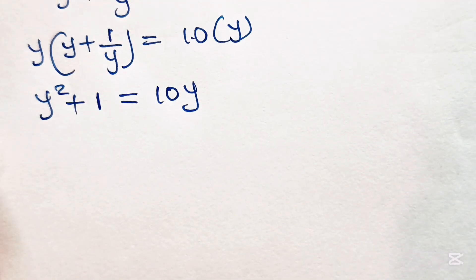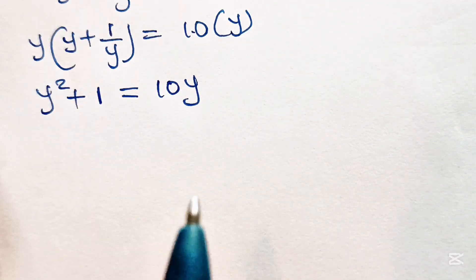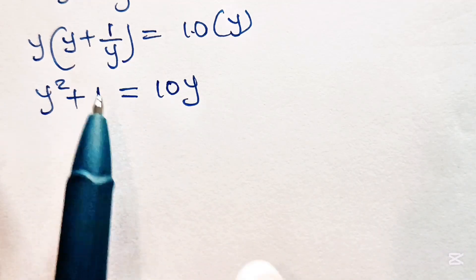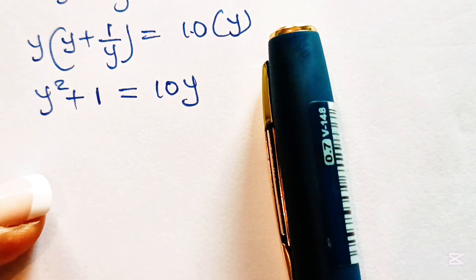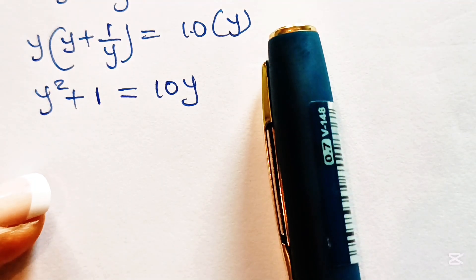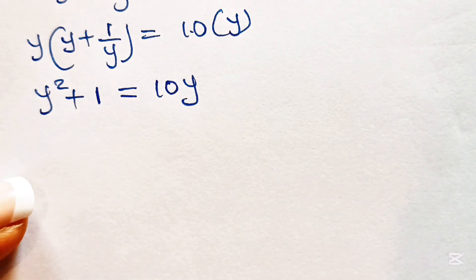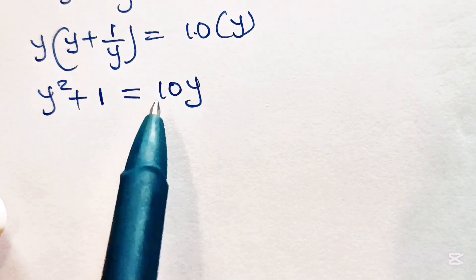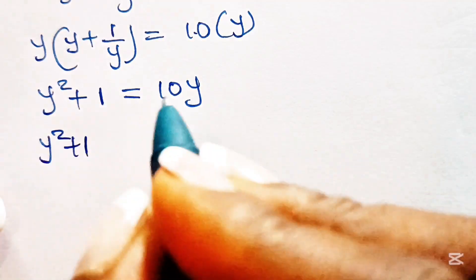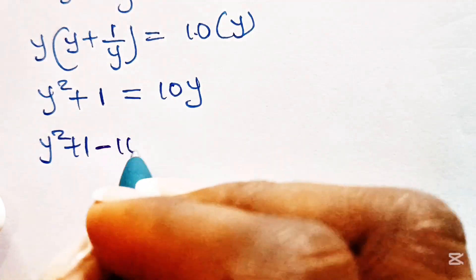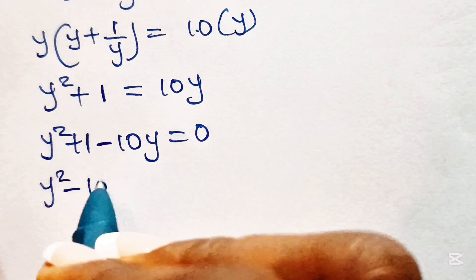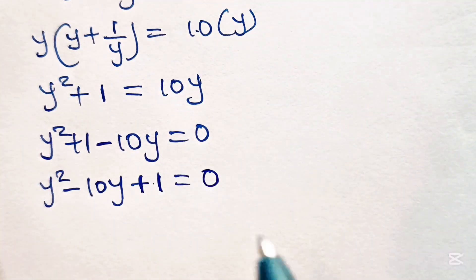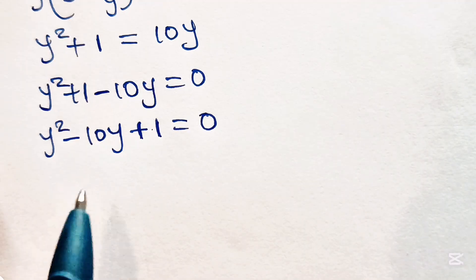Notice that we just formed a quadratic equation, but we are not actually looking for the value of y — we are looking for the value of x, so stay tuned to see how we do that. If this is the first time you're coming across this channel, please click on the subscription button and turn on your notification bell. Now, let's bring this to one side: we have y squared, and 10y becomes minus 10y, so we have y squared minus 10y plus 1 is equal to 0.